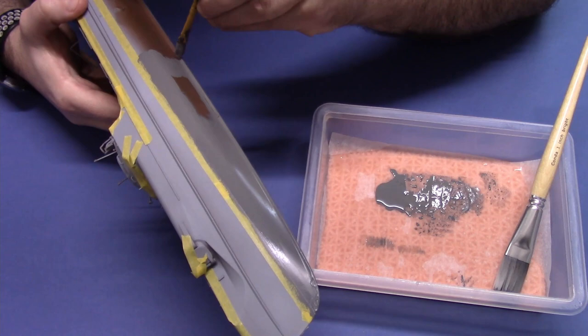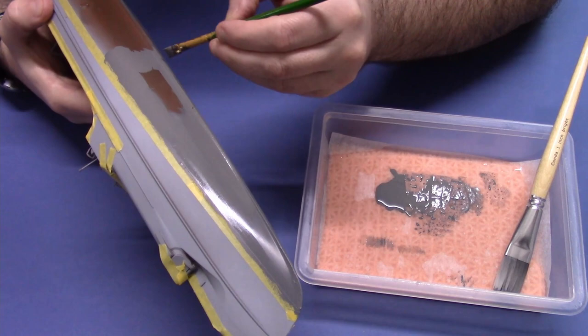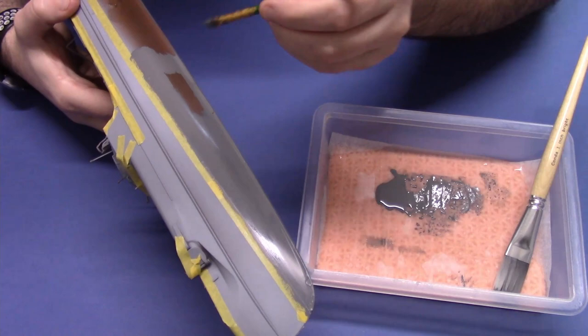The wet palette is just a little container filled with a sponge, and that sponge is covered in water. On top of that sponge I've added a piece of baking paper, and then that keeps the paint from completely drying out.